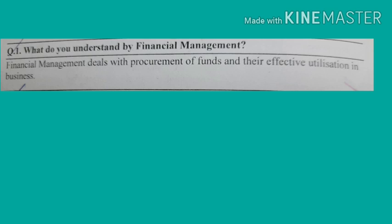The procurement of funds involves the following steps: one is identification of sources of finance, second is determination of finance mix, third is raising of funds, and fourth is division of profits, meaning dividend decision. The second aspect of financial management is effective utilization of funds. The finance manager is responsible not only for procurement of funds but also for its effective utilization.